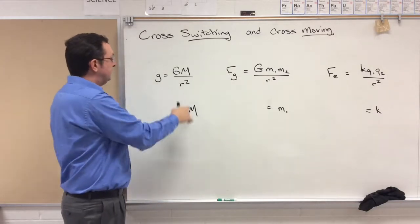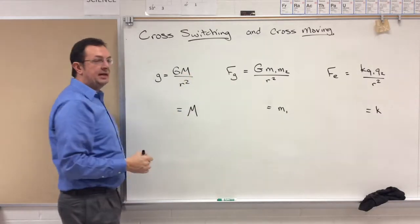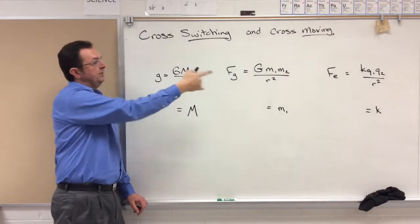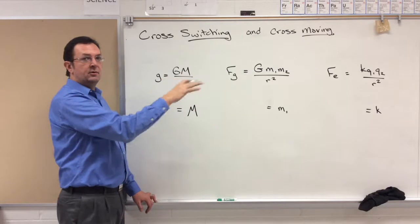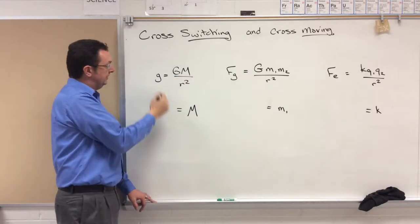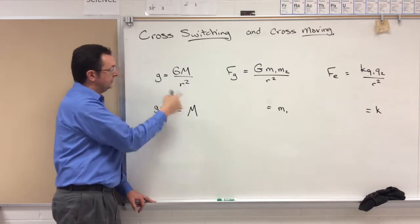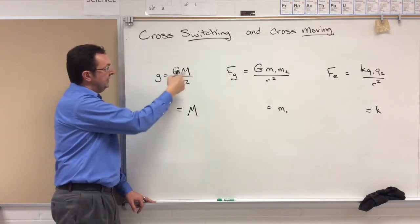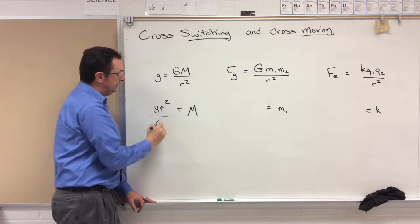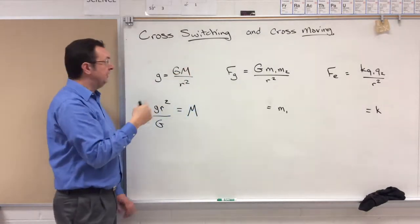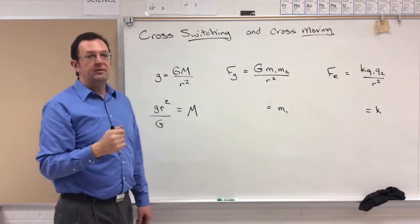If I want to solve for this capital M on that side, I can move this denominator up to that numerator. There are no addition signs, no subtraction signs, but this gets moved to the numerator. GR squared moves up to the numerator.